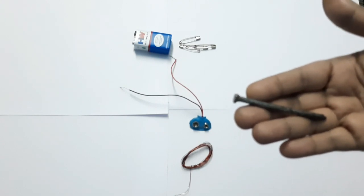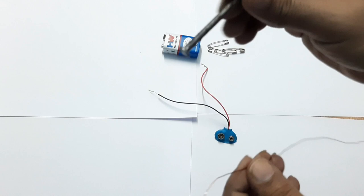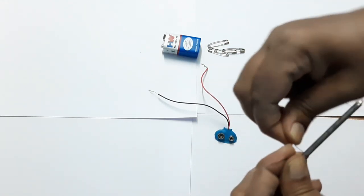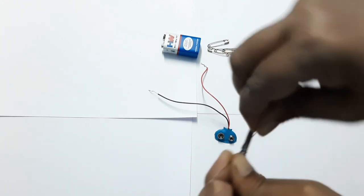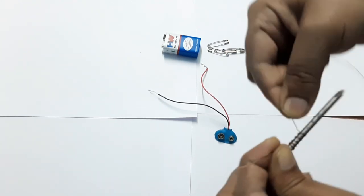If it's rusted, the effect will be less. Take the iron nail and wrap the copper wire around the iron nail. Keep it very tight and the circles should be close to each other.